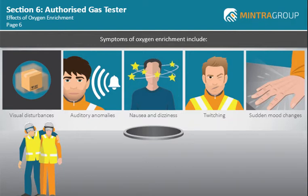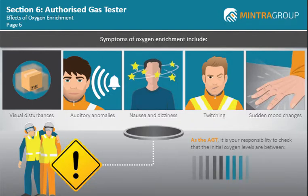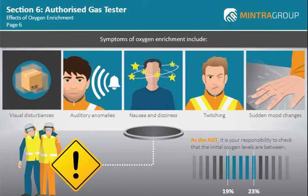This can be especially dangerous within a confined space where the access and egress may be restricted. As the AGT, it is your responsibility to check that the initial oxygen levels are between 19% and 23% before work begins. Ideally, they should be 21%. Continuous monitoring of the atmosphere within a confined space is essential to provide early warning of any risk of oxygen enrichment.